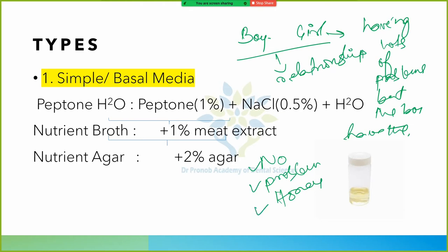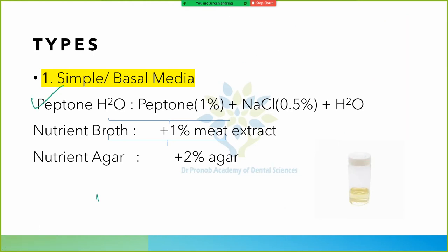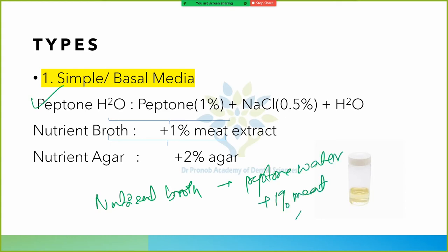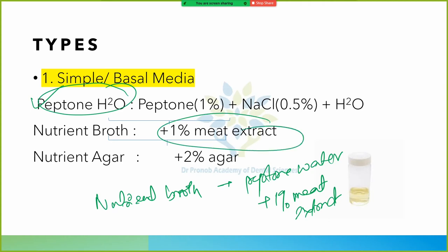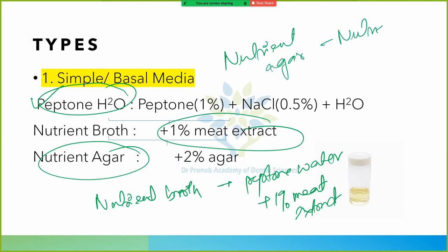Nutrient broth consists of peptone water plus 1% meat extract. Nutrient agar is nutrient broth plus 2% agar. Nutrient agar is almost colorless in appearance.